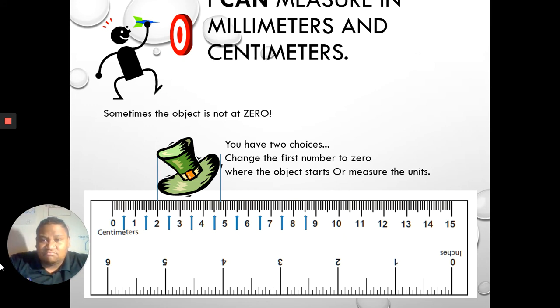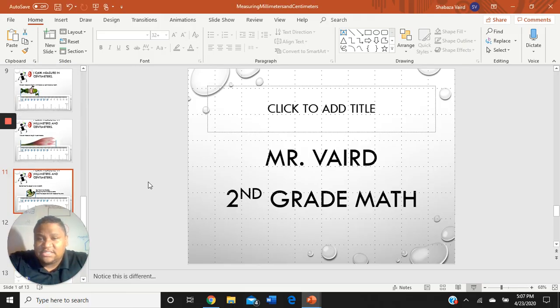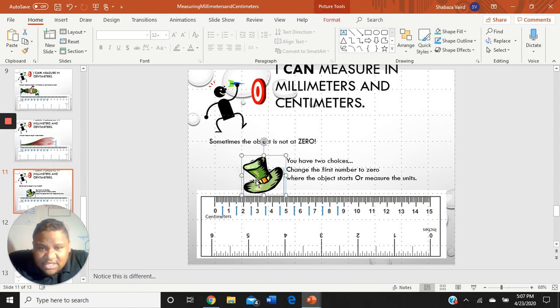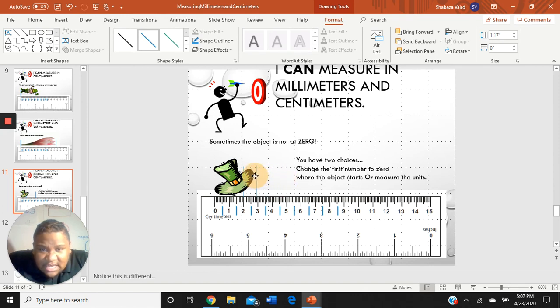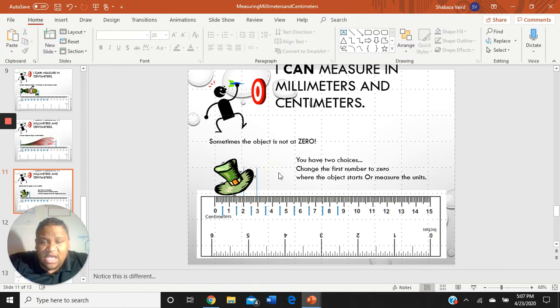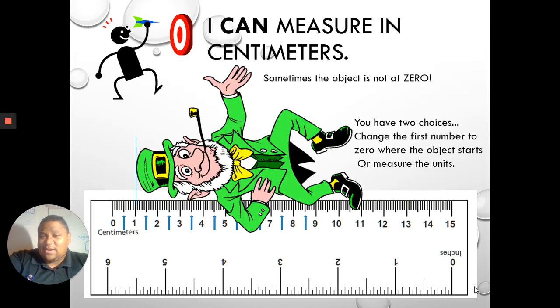Let's look at this one. It says sometimes the object is not at zero, and this one starts at two and ends at the five. You have two choices. You can either change the first number to zero or where the object starts, or measure the unit. So we are going to start at the zero. Let's change it together. We're going to move this over to the zero and we're going to see where it stops. It stops at the three. So this hat is three centimeters long. We had to change that one ourselves, right?